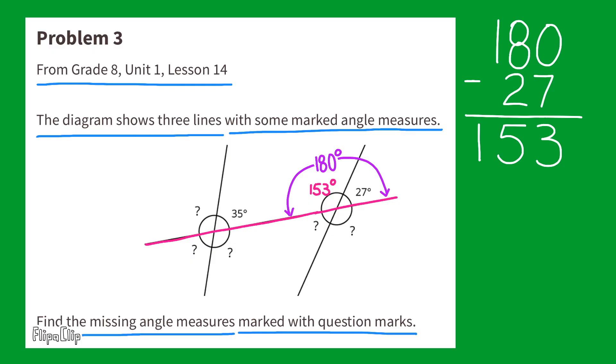Let's go back to the angle that measures 27 degrees. Its vertical angle also measures 27 degrees. So, we can change that question mark to 27 degrees. And the remaining question mark for the group of angles on the right-hand side is the vertical angle of 153 degrees.